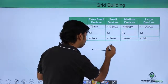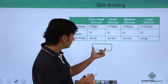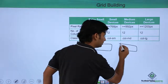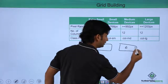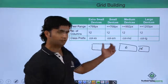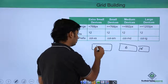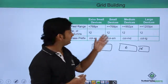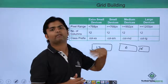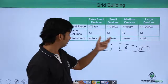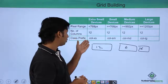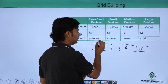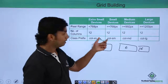For example, for extra small devices you may want all 12 columns in the first row, but for a small device you might want two items side by side — six and six columns in the first row. These column class prefixes include things like col-xs-12 if you want to occupy all 12 columns.